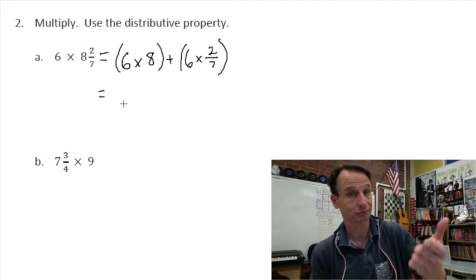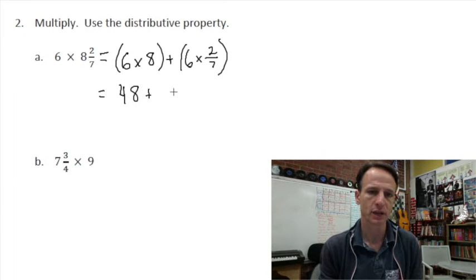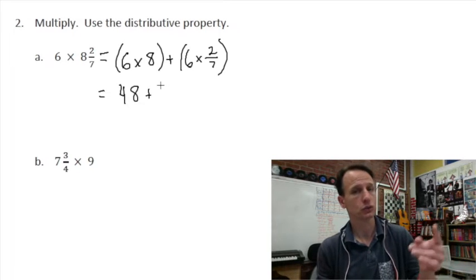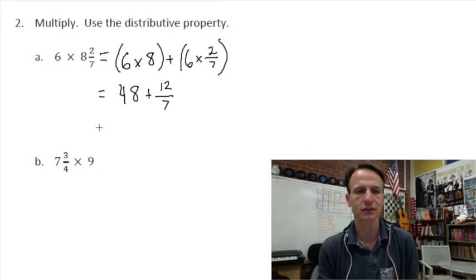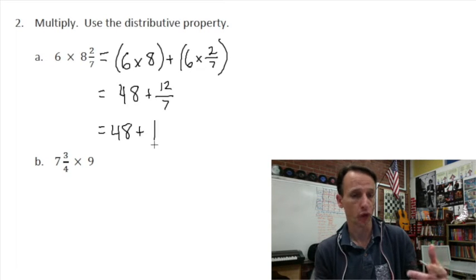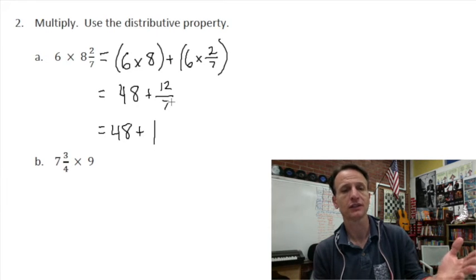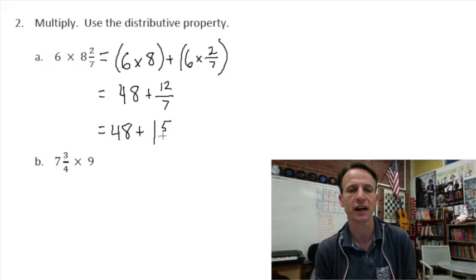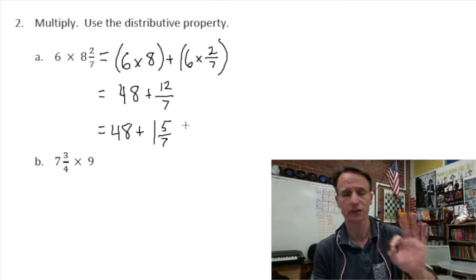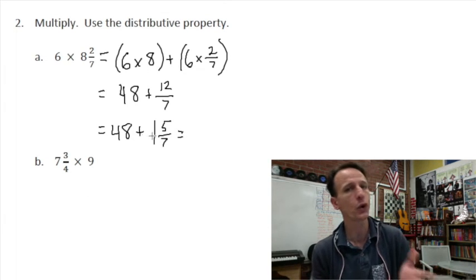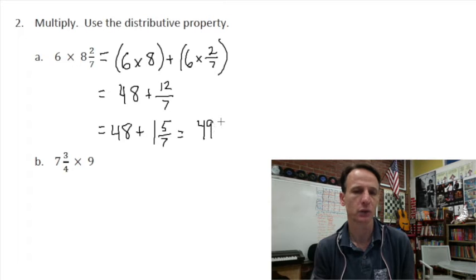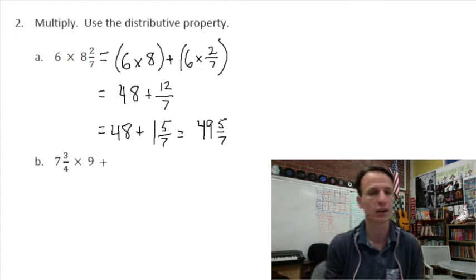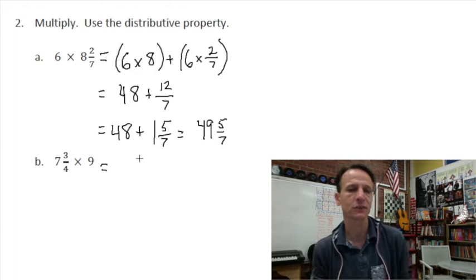Six times eight is 48, and then six times two-sevenths is 12-sevenths. Now, how many sevens are in 12? There's one seven — one times seven is seven — and that leaves five sevenths, since 12 minus seven is five. When we put these two products together, we have 49 and five-sevenths.